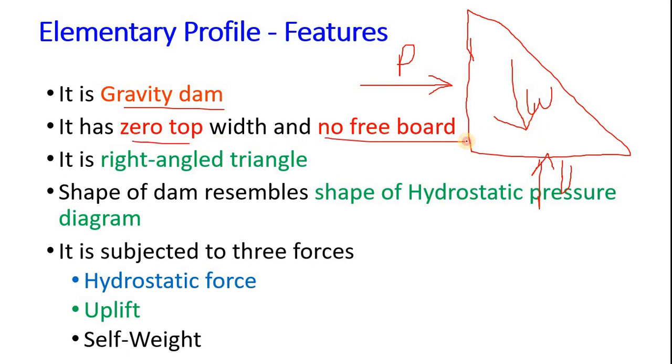It has zero top width and no freeboard. It means you can see here right angle triangle, it has zero top width. If it had some width then it would have been something like this. Here you can see the top width and it has no freeboard. It means water is up to the top level. Had it had freeboard, the water level would have been somewhere here and this is the freeboard.